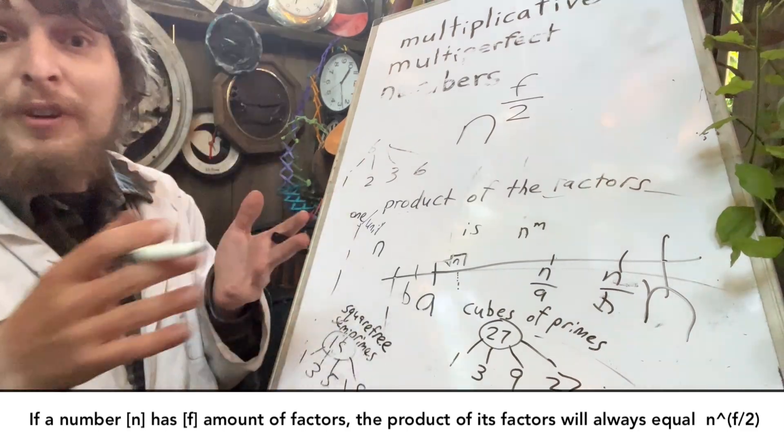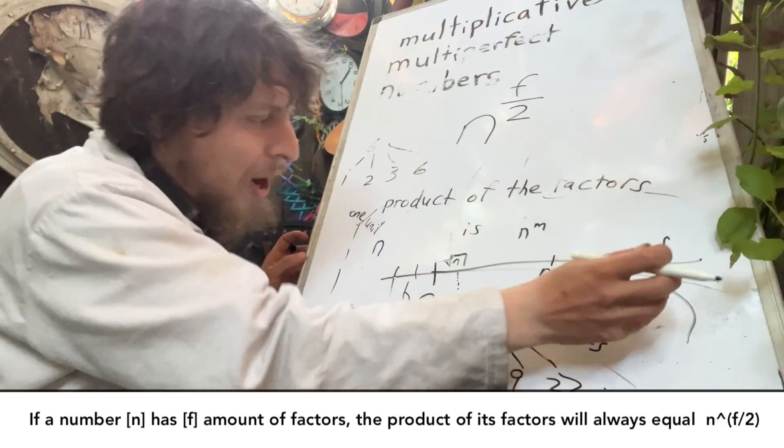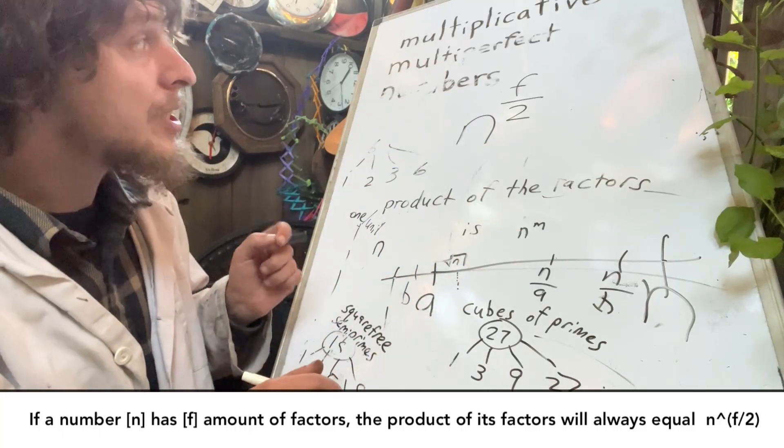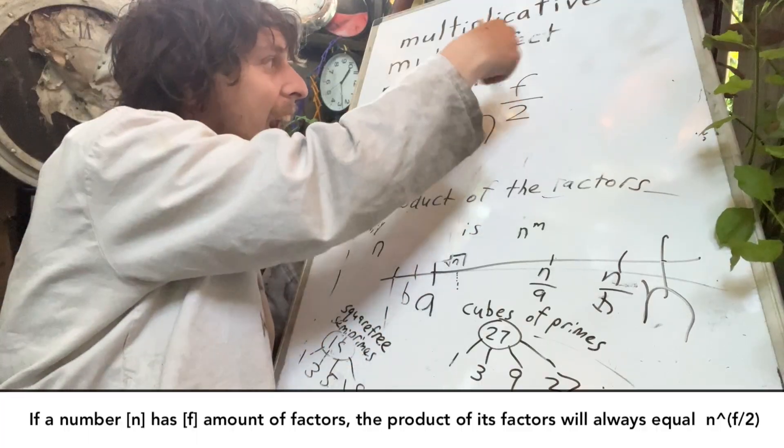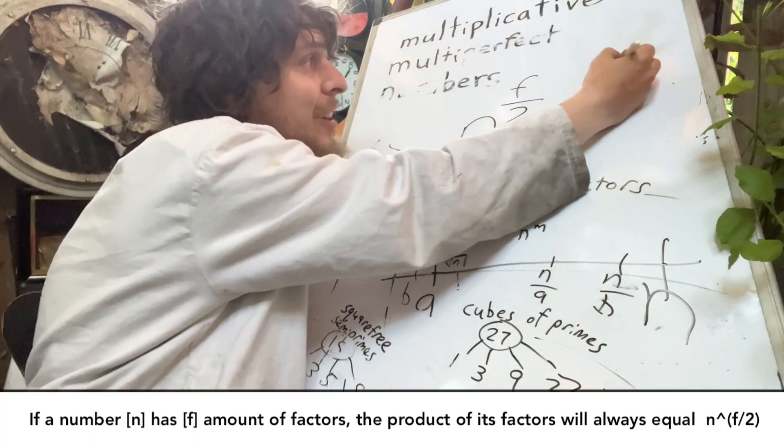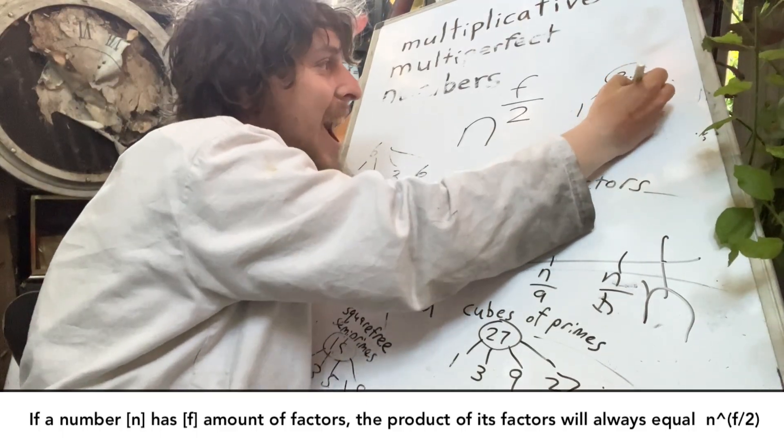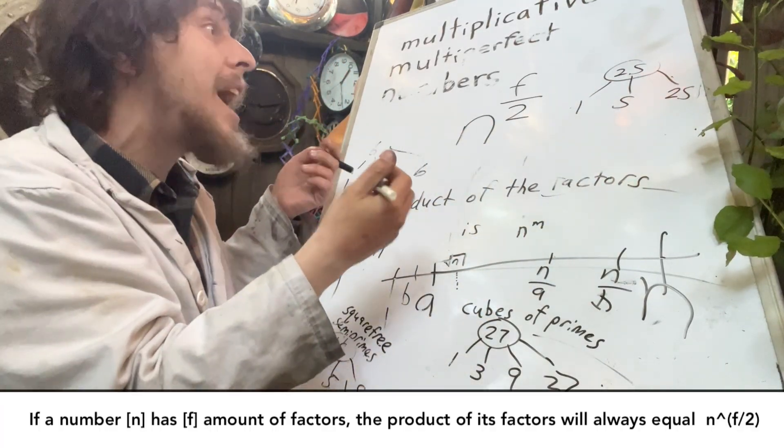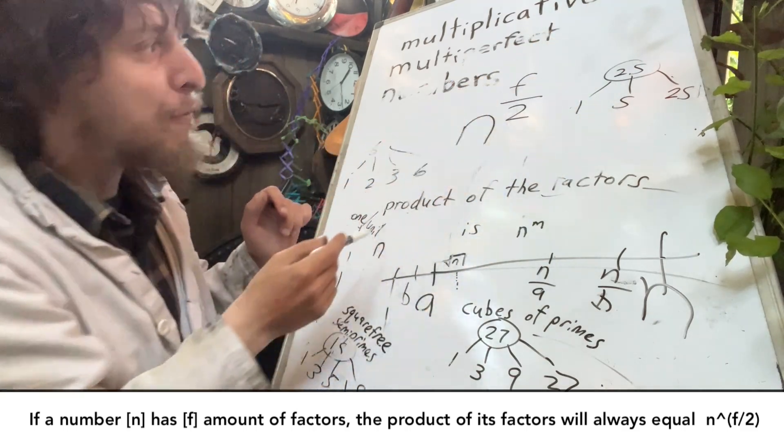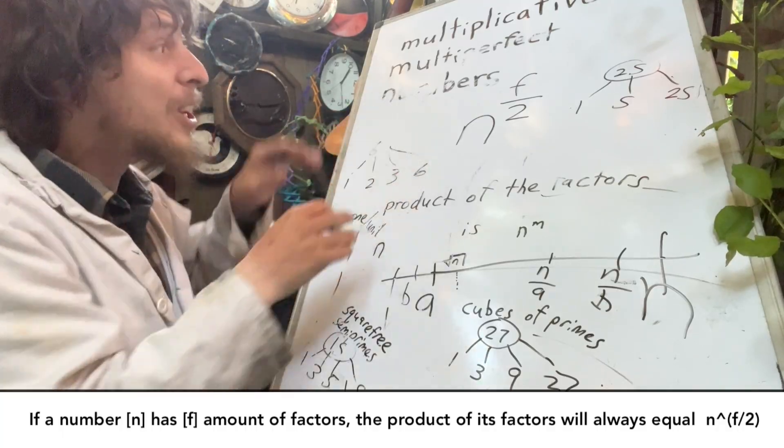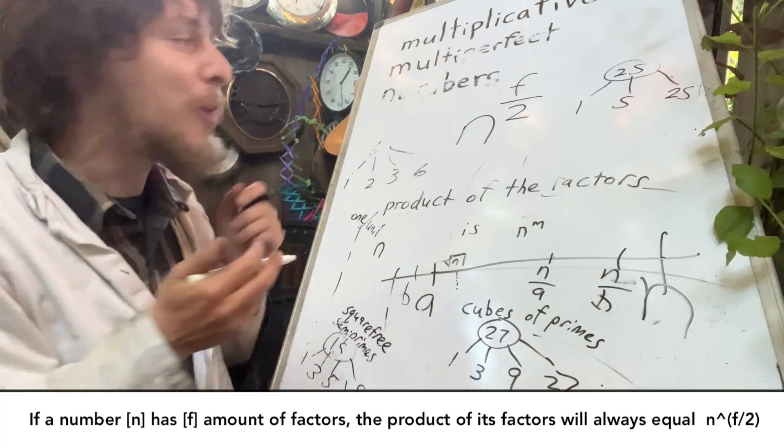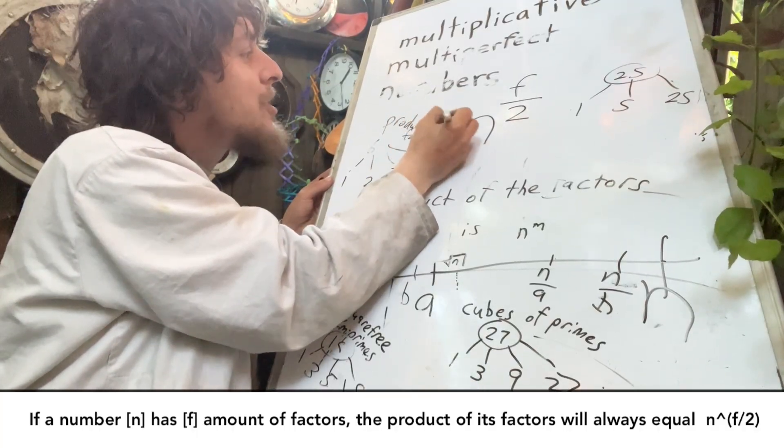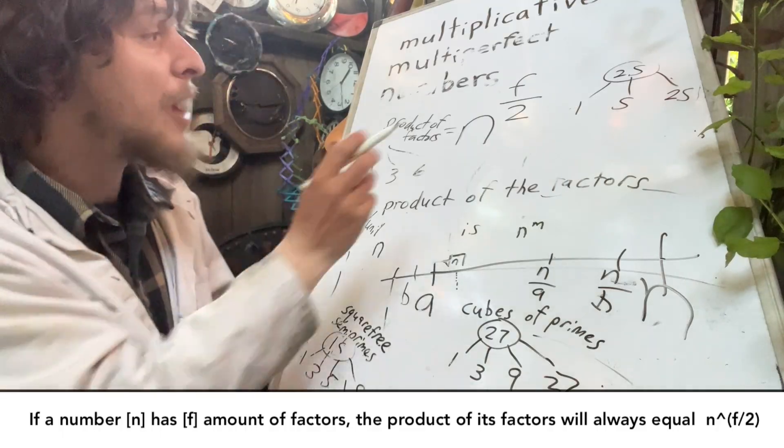Even in the exception cases, where a number was square and had an odd number of factors with one of them not coming paired with something else, this does cover it. Because the half ends up making that work. For example, if I took that number 25 that maybe I shouldn't have erased, and it has factors one, five, and itself, and I multiplied those together, I do get 25 to the power of three halves, because it has three factors. And this pretty cool formula was one of the things I wanted to make this bonus video about. It's that the product of the factors of a number is always going to be n to the power of the amount of factors divided by two.